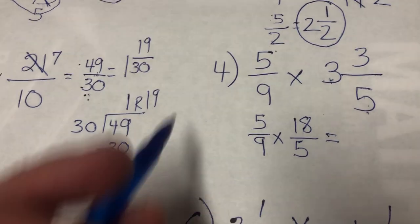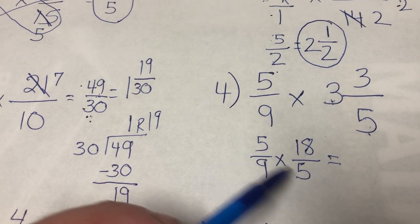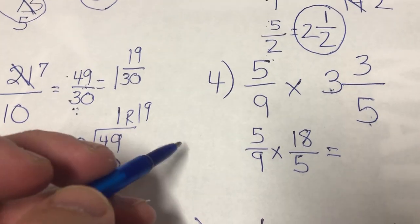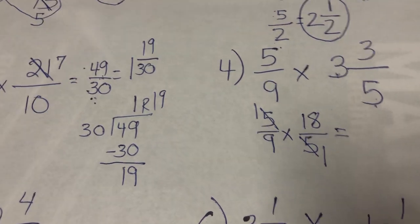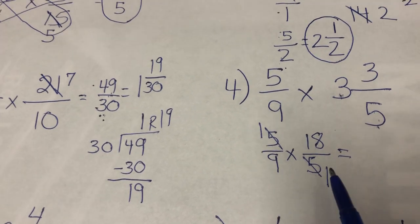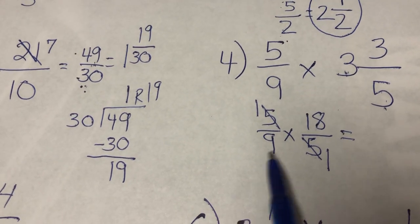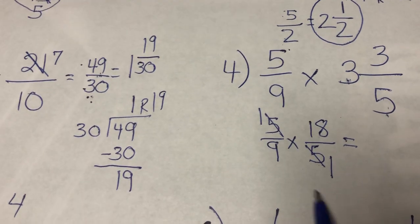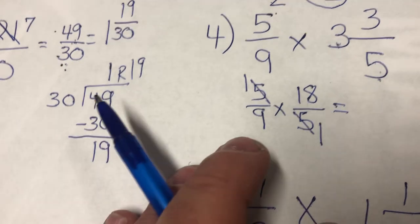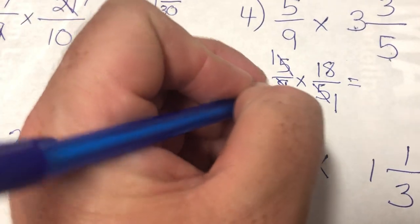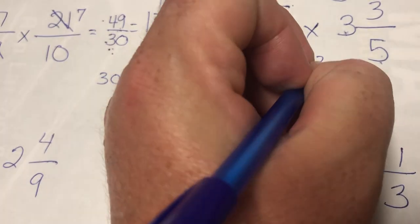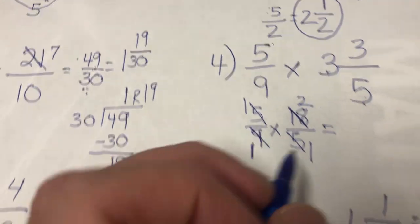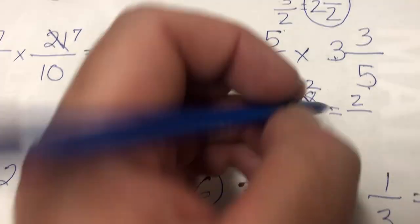Now thinking about cross-checking — I notice I have two fives. If two numbers are ever the same, it can be divided by itself. Five divided by five is one, and five divided by five is one, so cross them both off and make them both ones. Then I look at nine and eighteen — nine is the biggest number that can go into both. Nine divided by nine is one, and eighteen divided by nine is two. Now I multiply: one times two is two, and one times one is one. I end up with two over one.